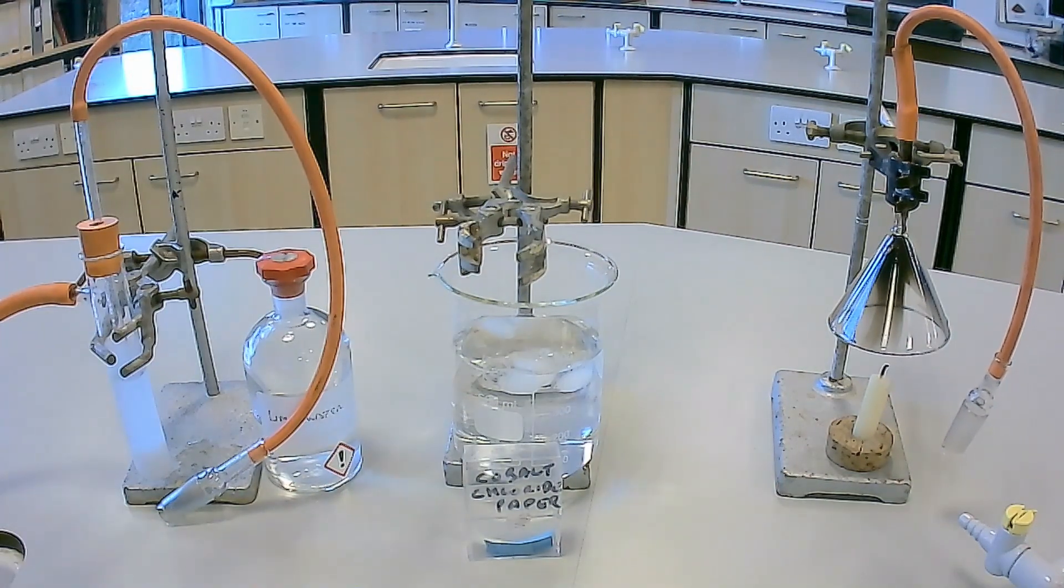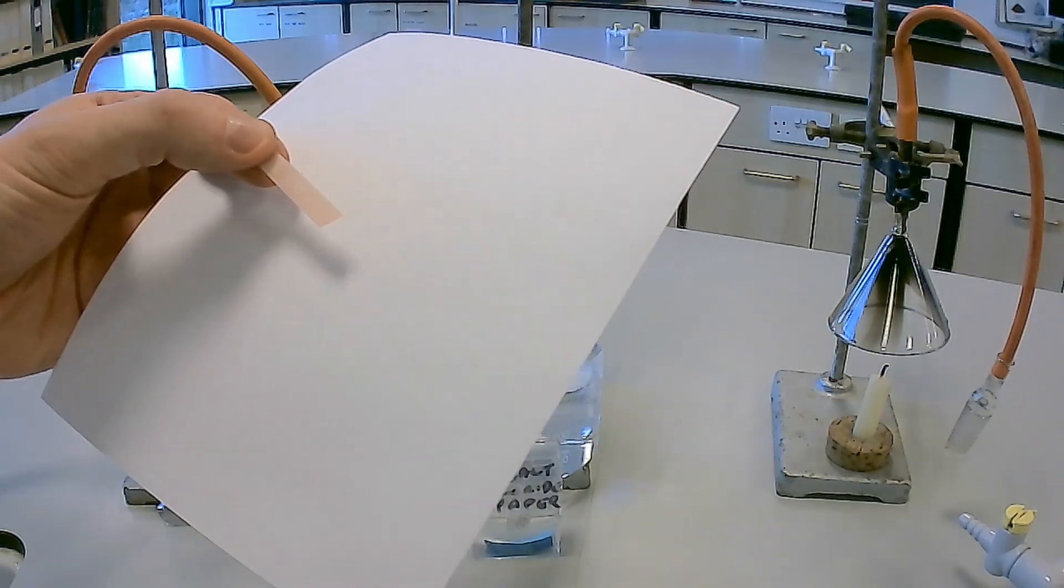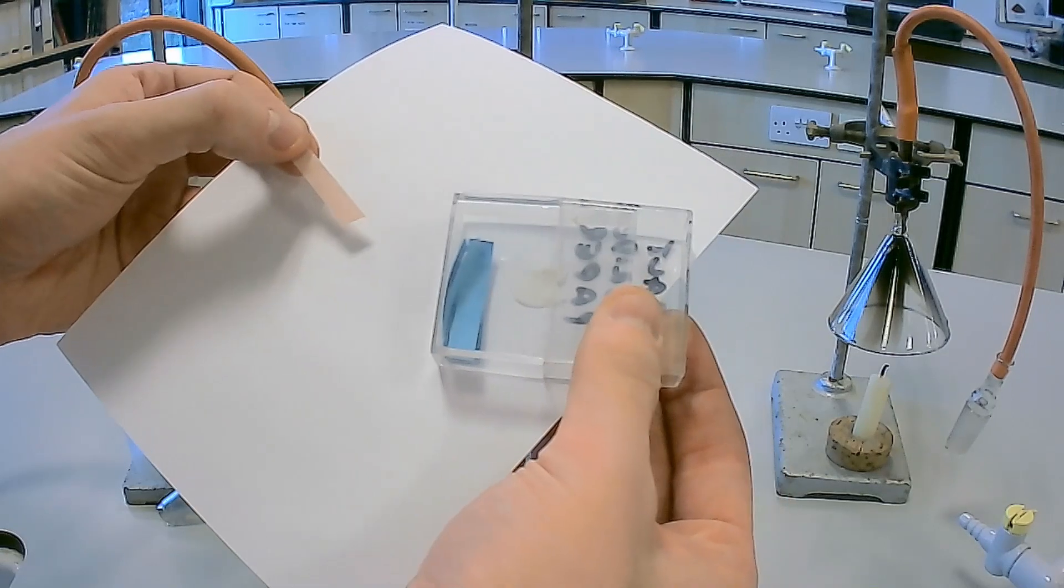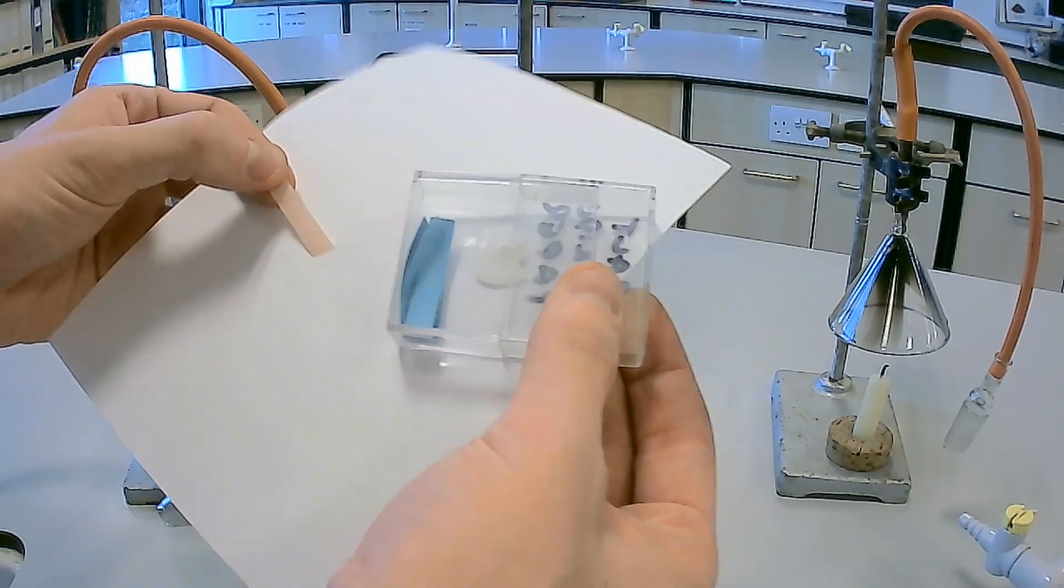As we inspect the cobalt chloride paper in the U-shaped tube following the combustion experiment, we can see that it has changed color from blue to pink. This indicates the presence of water in the combustion products.